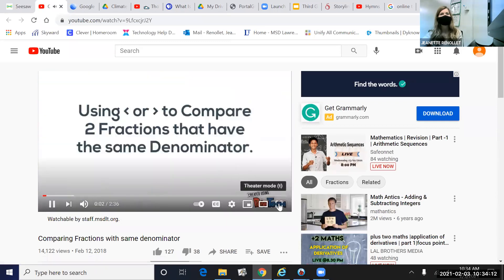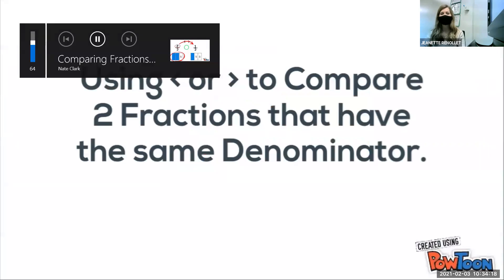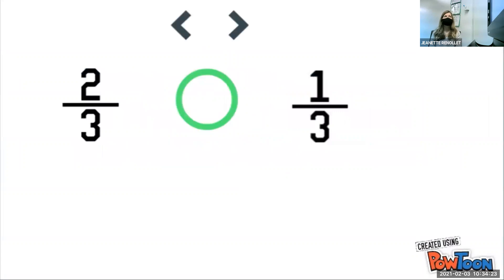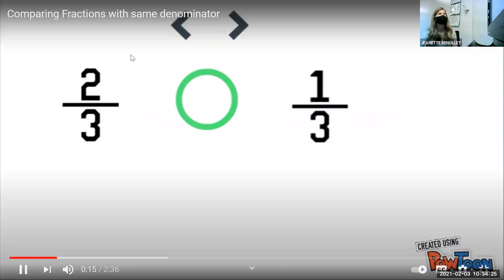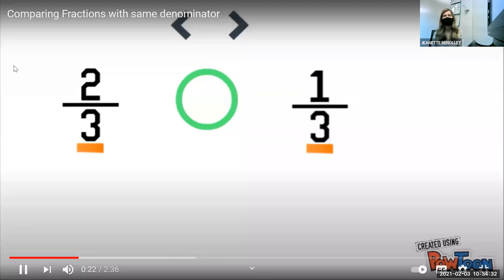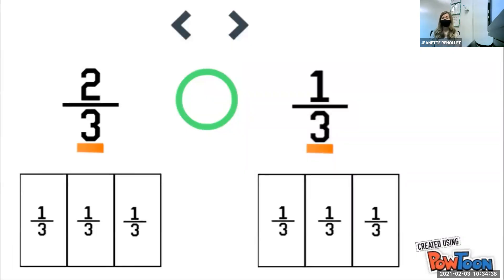What's up, third graders? Today's lesson is on using less than or greater than symbols to compare two fractions that have the same denominators. Let's get it cracking. Here we have two-thirds and one-third. The first thing to do when comparing any fractions is to look at their denominators. We see that they both have a denominator of three, which means both visual models will be made out of thirds.